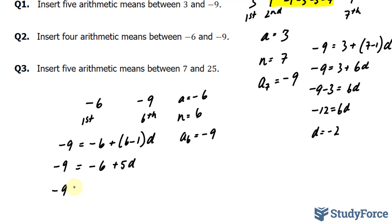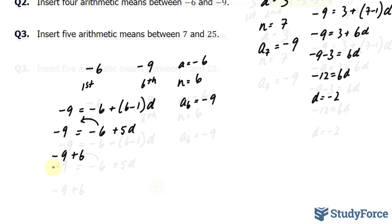Negative 9 plus 6, bringing that over. Dividing this by 5, we get our d value. Negative 9 plus 6 is negative 3 over 5.